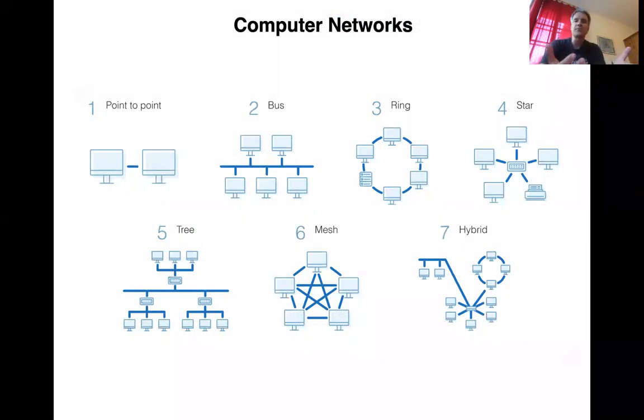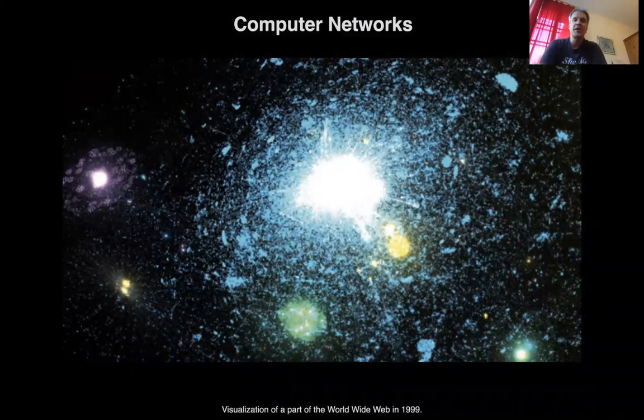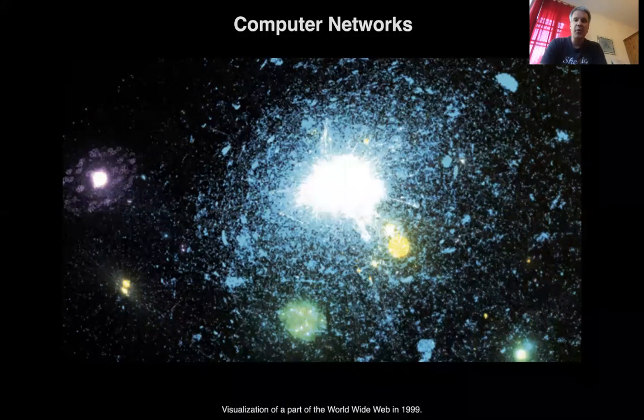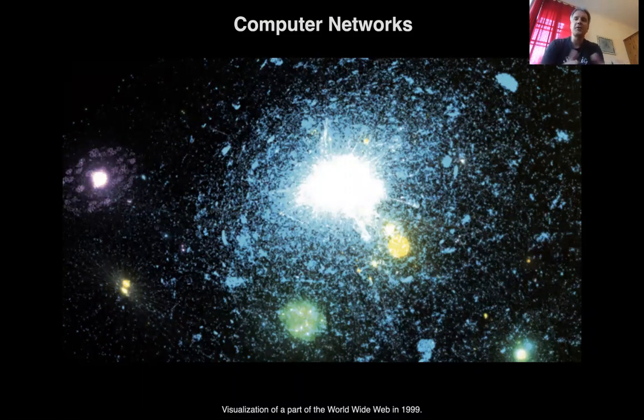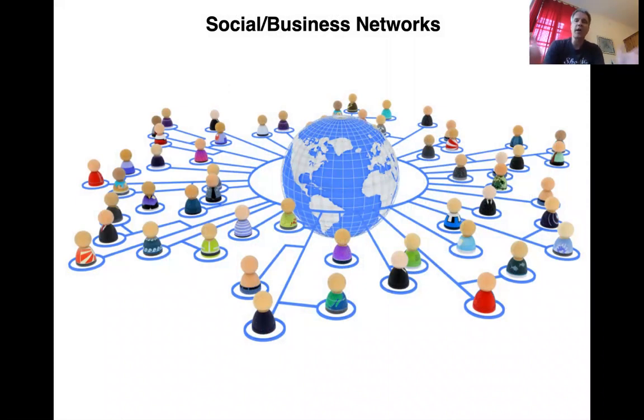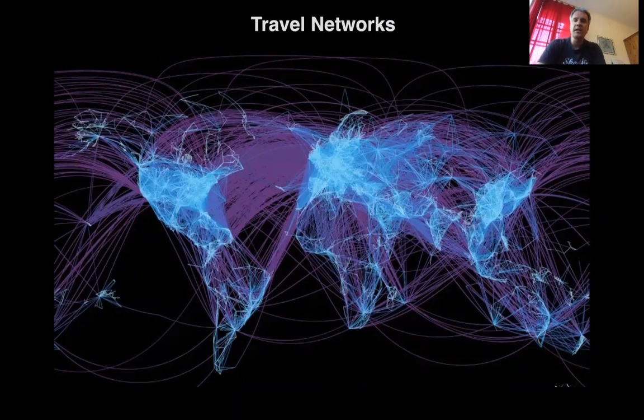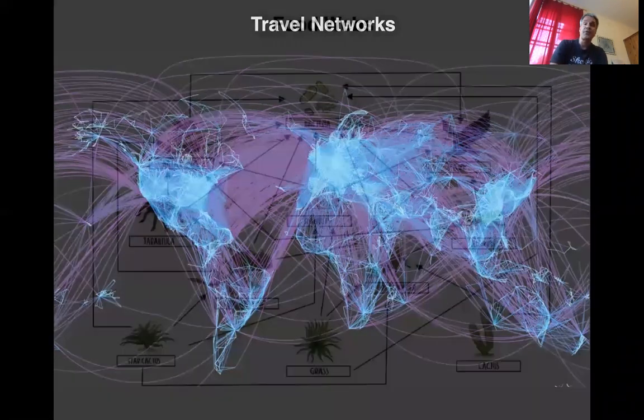We can use these graphs to represent all kinds of systems in the real world. Of course, computer networks are the quintessential technological application. Different topologies of computer networks are shown here. This is a fascinating picture. It's not astronomy. It's a visualization of a part of the World Wide Web, 1999. It's a visualization of a dataset that was used in a pioneering study of networkology, of looking at the global structure of networks and characterizing the networks through that.